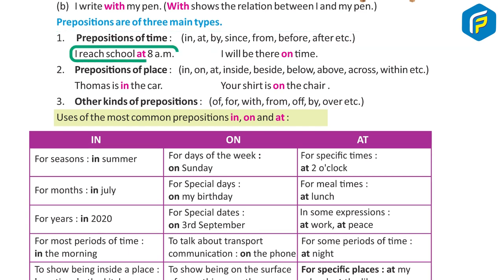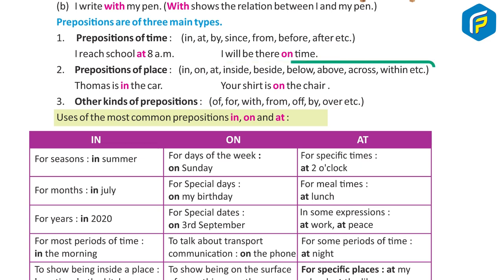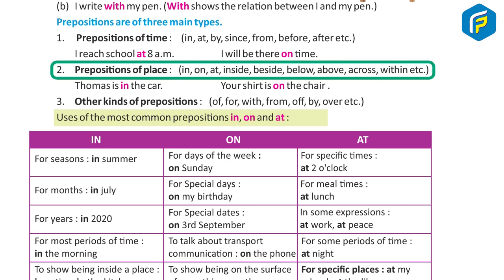Examples: I leave school at 8 am. I'll be there on time. Type 2: Prepositions of Place — in, on, at, inside, beside, below, above, across, within, etc.